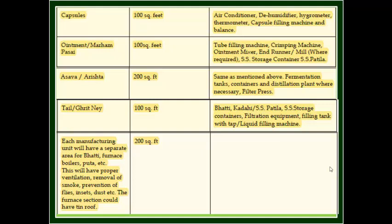Four: Ointment, Maraham, etc. Space required: 100 square meters. Recommended equipment: tube filling machine, crimping machine, ointment mixer, roller mill, etc.